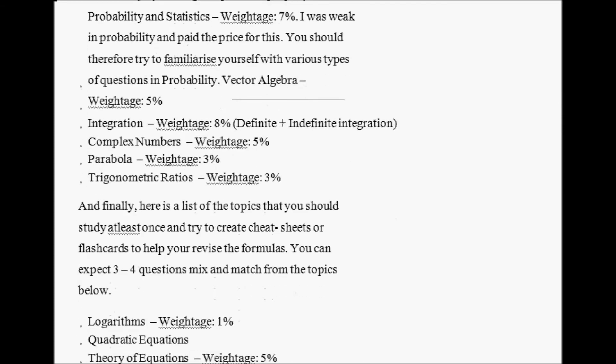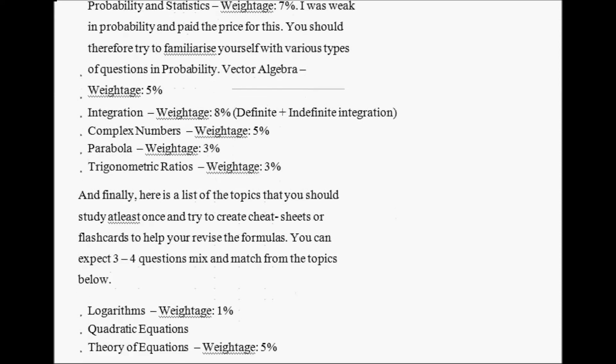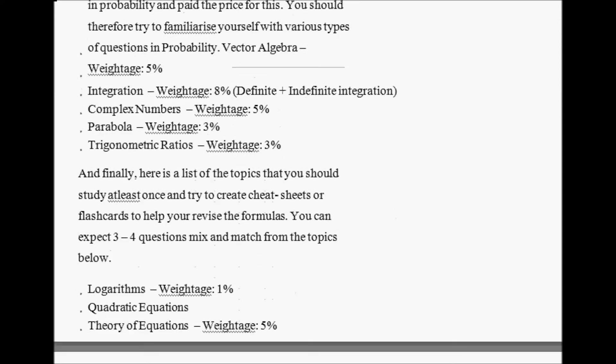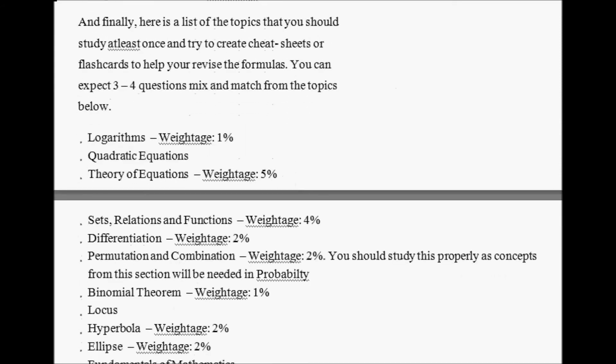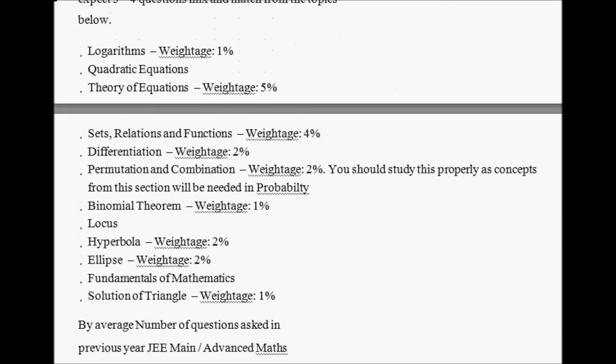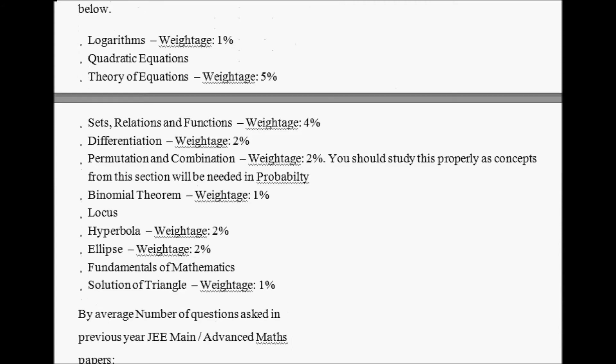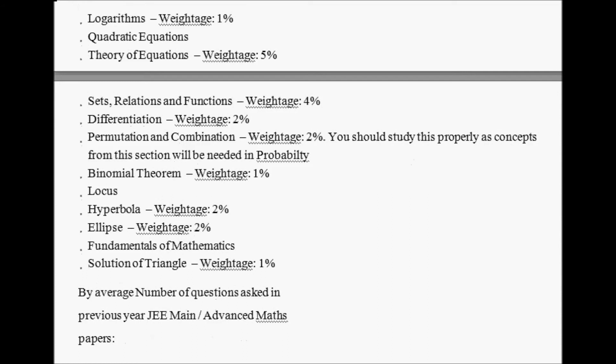Finally, here is a list of topics you should study at least once and try to create cheat sheets or flashcards to help you revise the formulas. You can expect 3-4 questions mix and match from the topics below: Logarithm - weightage 1% only. Quadratic Equations, Theory of Equations, Trigonometric Solutions of Functions, Differentiation, Permutation and Combination - you should study this properly as concepts from this section will be needed in probability. Binomial Theorem, Locus, Hyperbola, Ellipse, Fundamentals of Mathematics, Solution of Triangles.